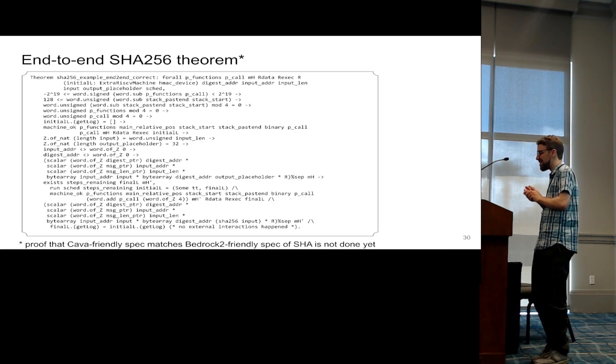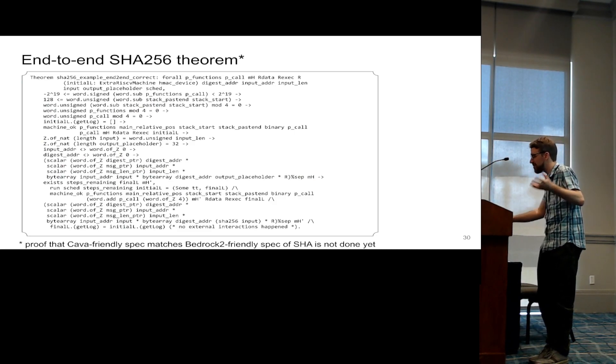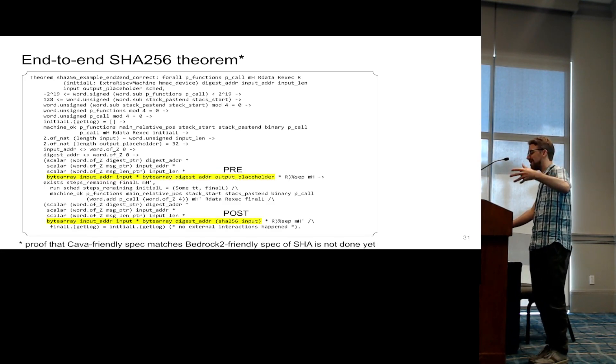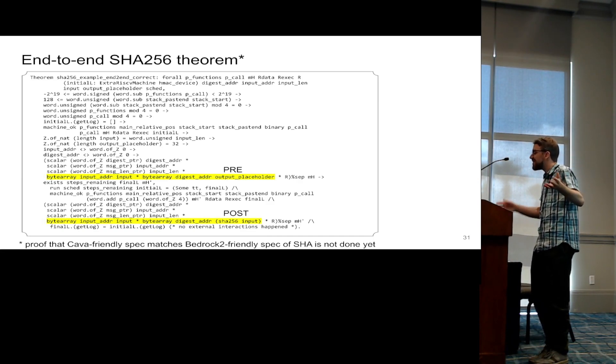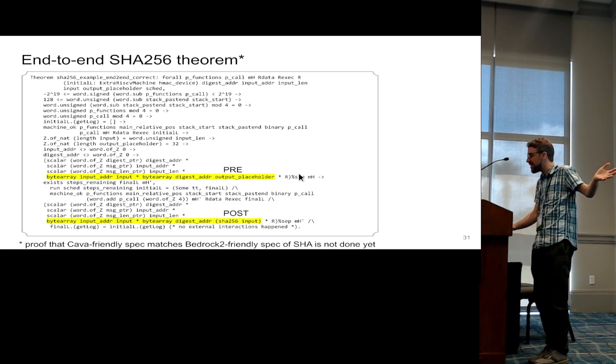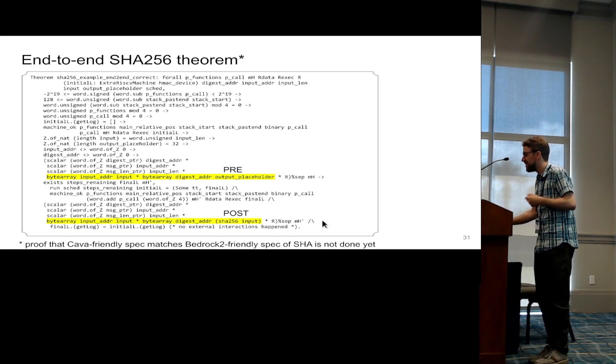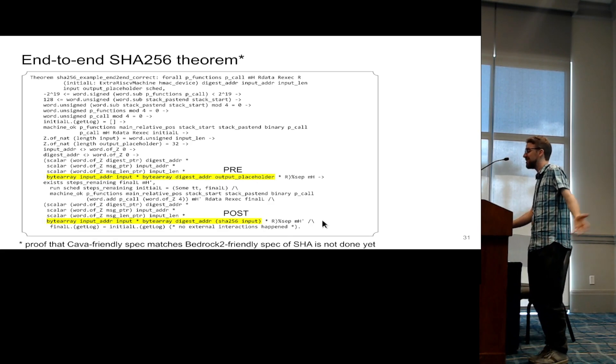I was able to write an end-to-end theorem, of course, you have to care about a lot of details, so it's kind of verbose, but I just wanted to show you that it actually fits on one slide, up to unfolding more definitions. The main thing is, okay, all right, if you have some random output placeholder, and then you run the thing, then the SHA is actually living there, that's the thing we proved. Modulo, the one thing that we did not prove yet.